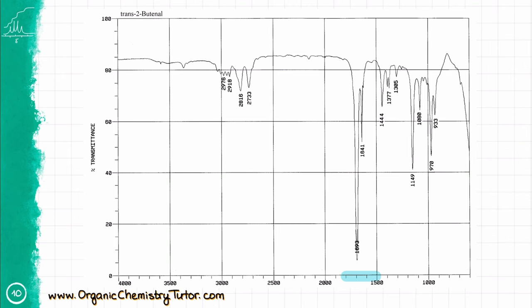The next important region is 1800 to 1500 centimeters, which is where we have various double bonds. For instance, in this case, I have a CO double bond at roughly 1700, and I also have a CC double bond at about 1650.